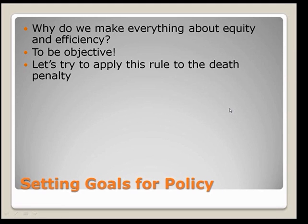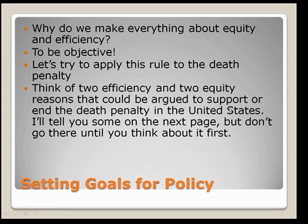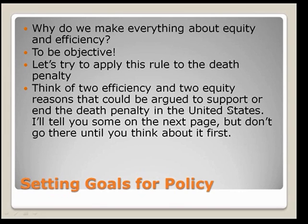Of course, if I asked this question, people would start making all sorts of arguments — 'this guy killed somebody, he ought to be killed,' or 'we're a civilized society that shouldn't take anyone's life.' We have to figure out a way to organize those arguments. Think of two efficiency and two equity reasons that could be argued to support or end the death penalty in the United States. I want you to pause right now and write down two efficiency and two equity reasons — don't just skip forward. I think you'll find that thinking about it forces you to learn what I mean by equity and efficiency.